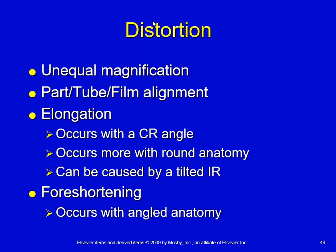We've got not just an increase in OID but a part-tube-film misalignment. Elongation comes with central ray angulation, and it can also come with a tilted image receptor. It occurs more with round anatomy than with any other type of anatomy.